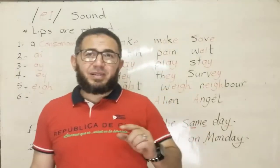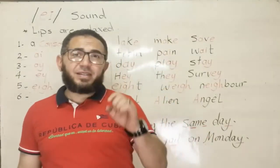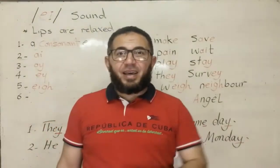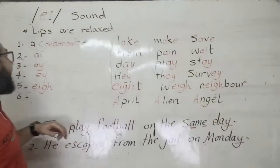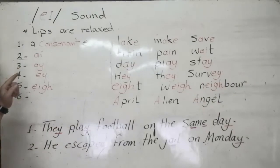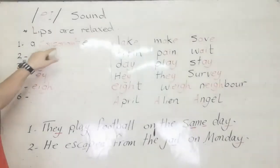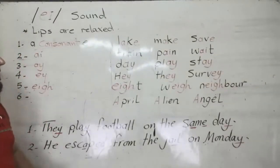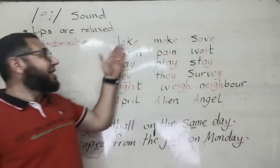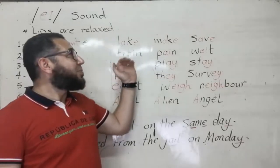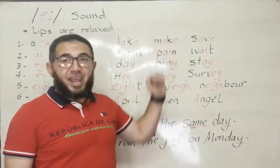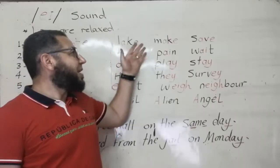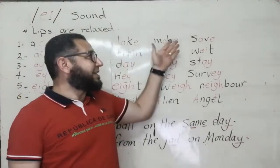So let's see the patterns of letters which have the sound A in it. We can find the sound A when we find a consonant between A and E. Like, lake, make, and save.